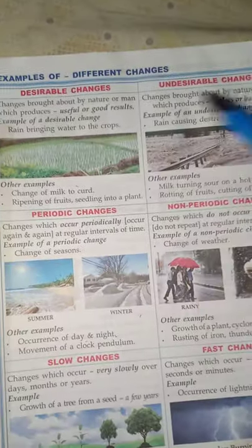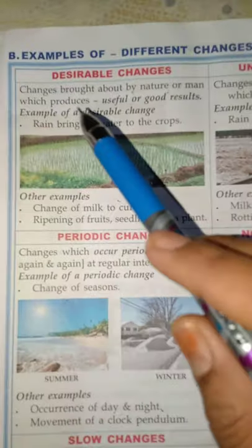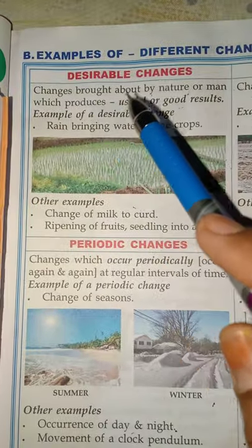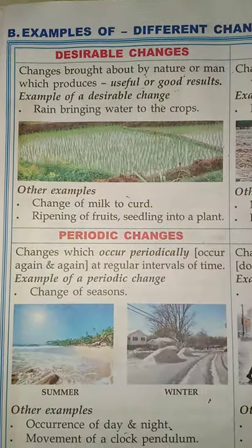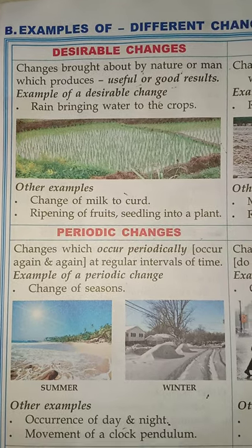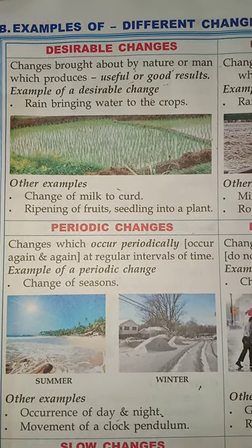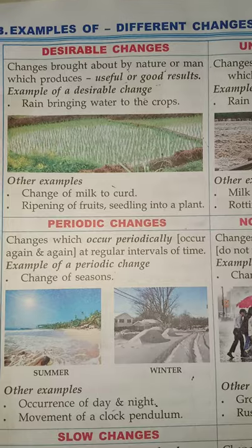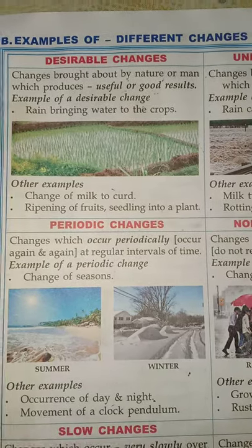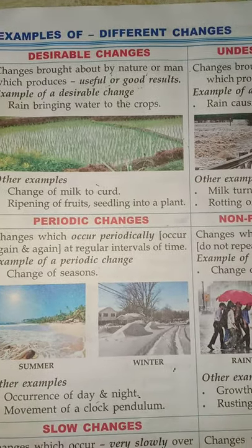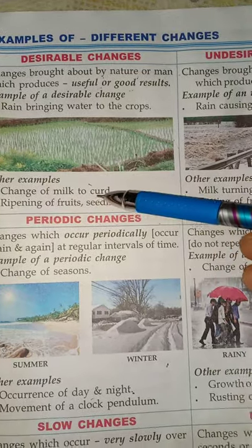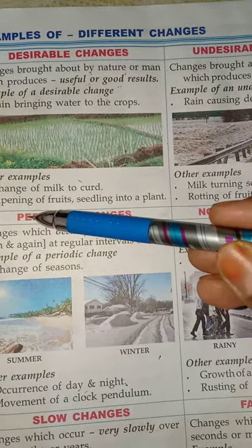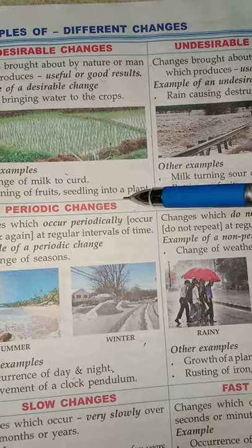The first one we have is desirable change. Changes that are brought about by nature or man with an intention to produce good results are called desirable changes. For example, rainfall is necessary for cultivation or agriculture. Similarly, we want milk to get converted to curd, we want the ripening of fruits, the growth of plants.